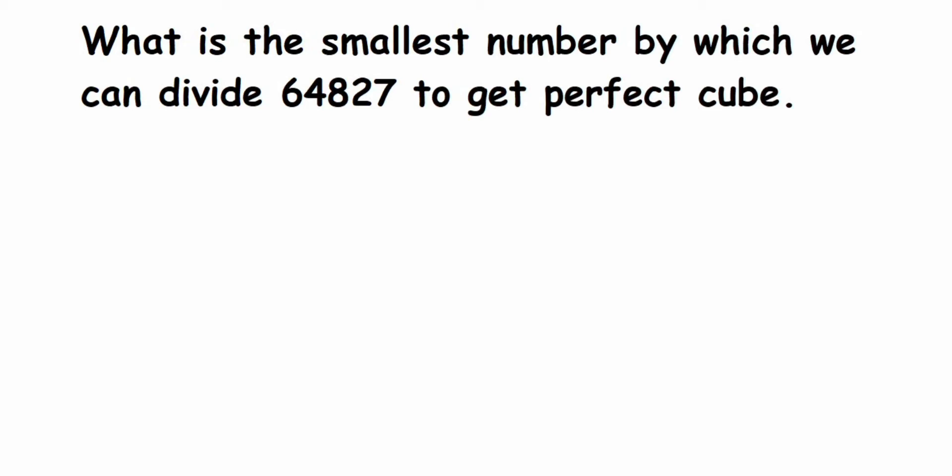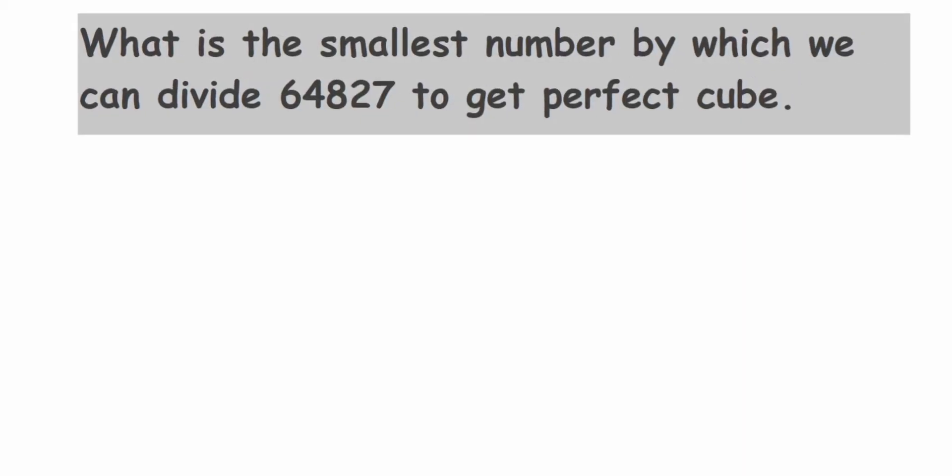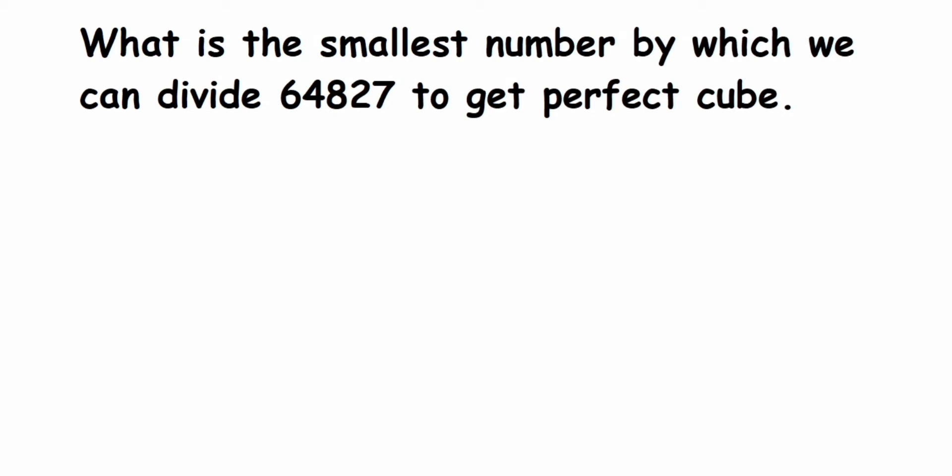Hi everyone, here is a question on perfect cube, asked by Vishal — thank you for asking. The question is: what is the smallest number by which we can divide 64827 to get a perfect cube? From the question, we know 64827 is not a perfect cube and we have to make it one. Whenever they ask for the smallest number to be divided or multiplied, we use the prime factorization method.